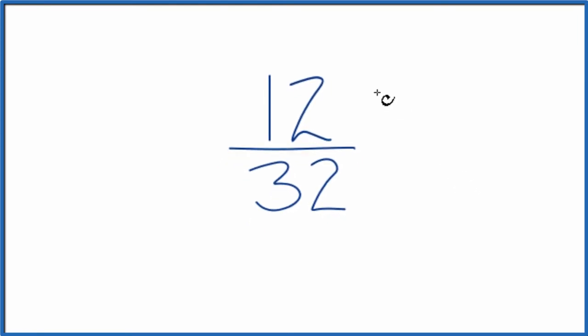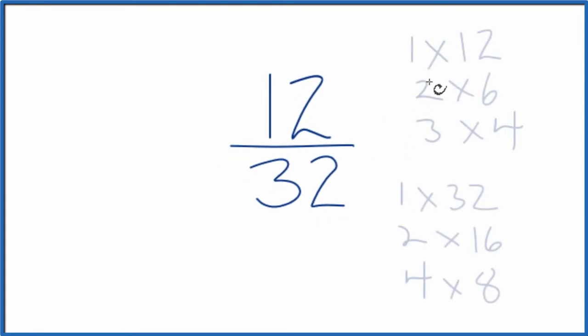So if we list the factors for 12 and 32, I'm looking for the greatest common factor here, and I see that the largest factor that goes into 12 and 32 is going to be 4.